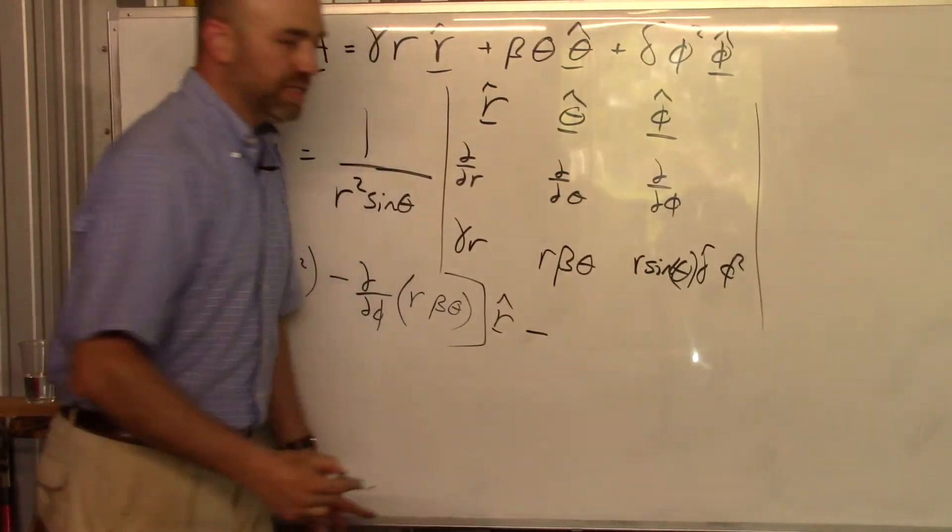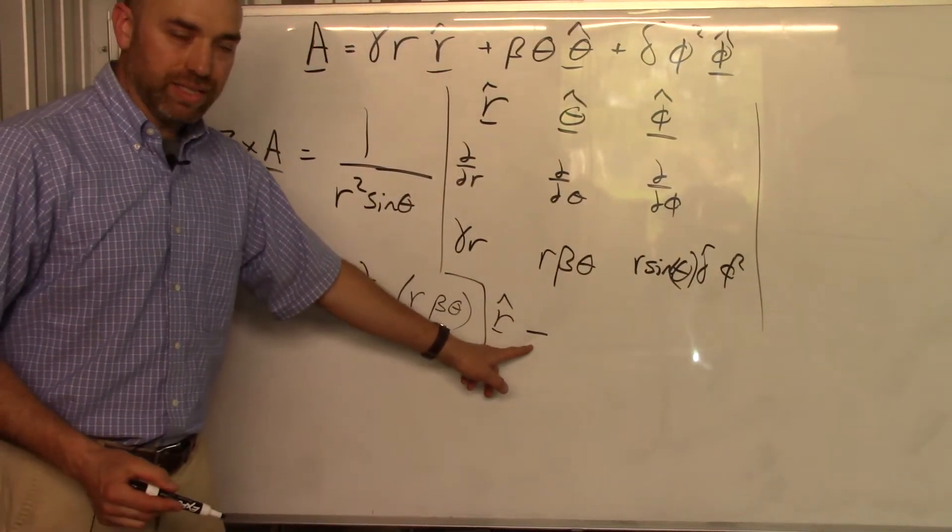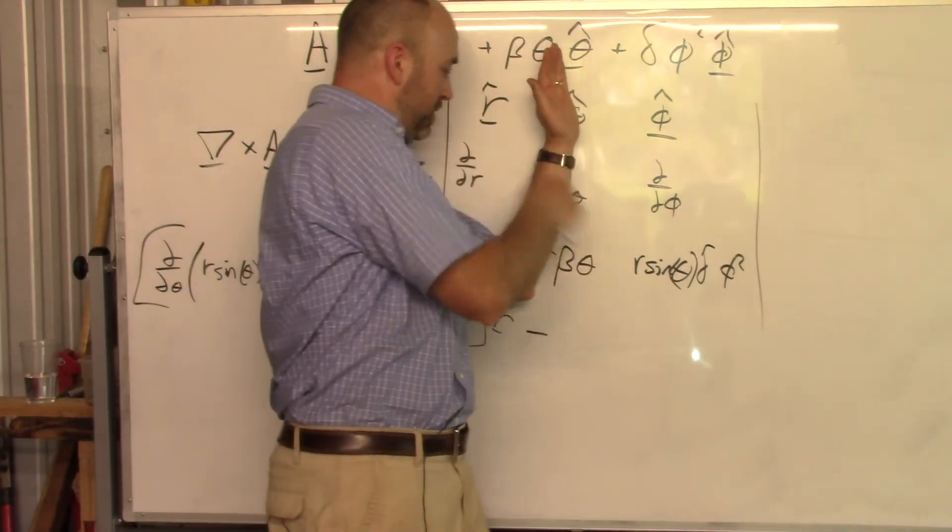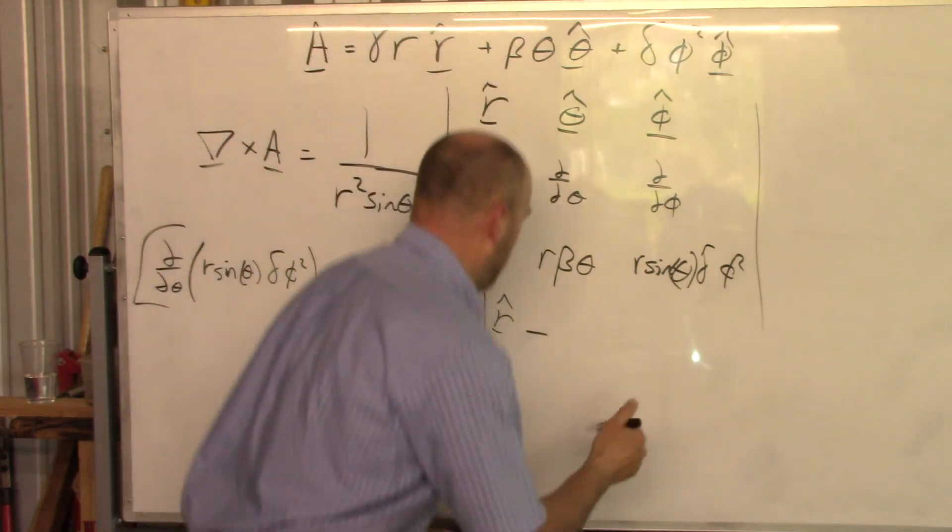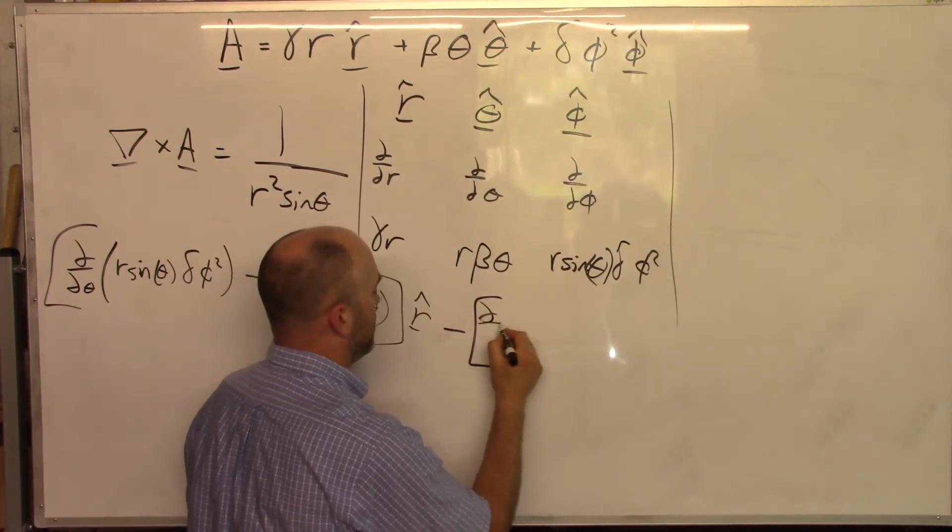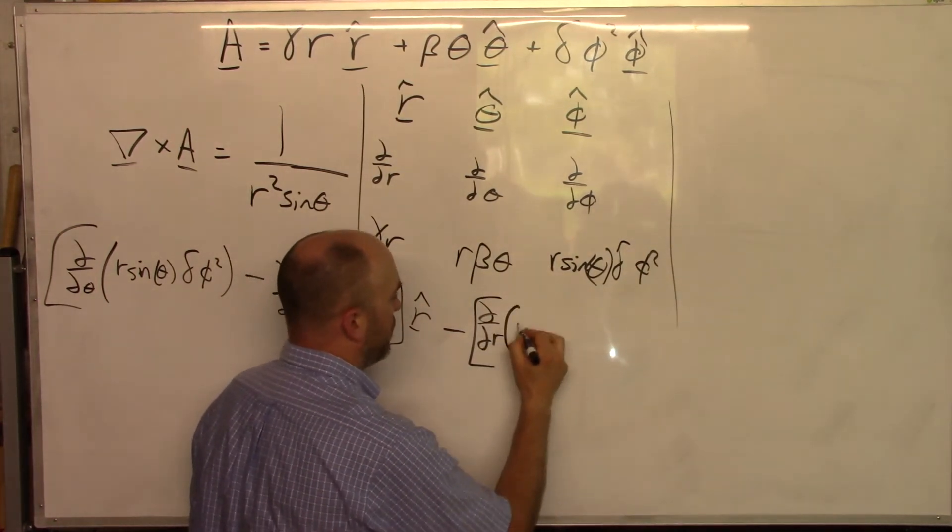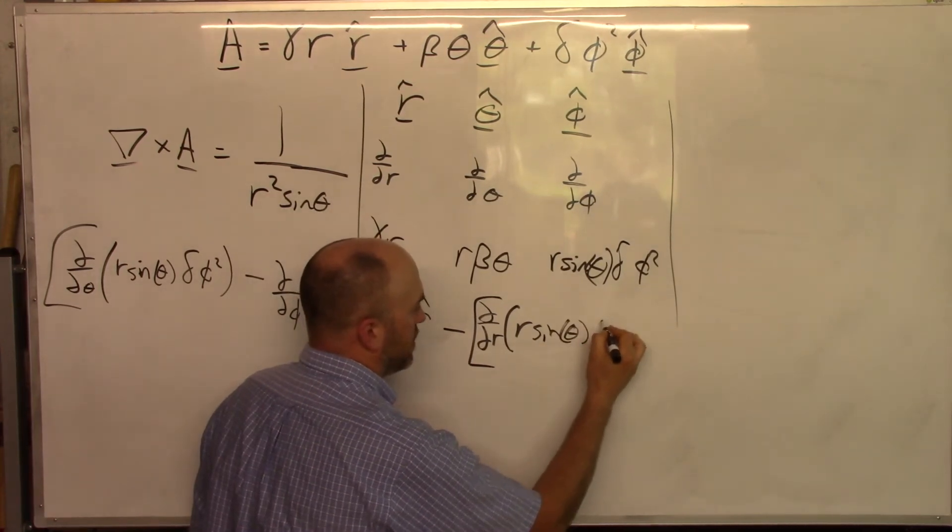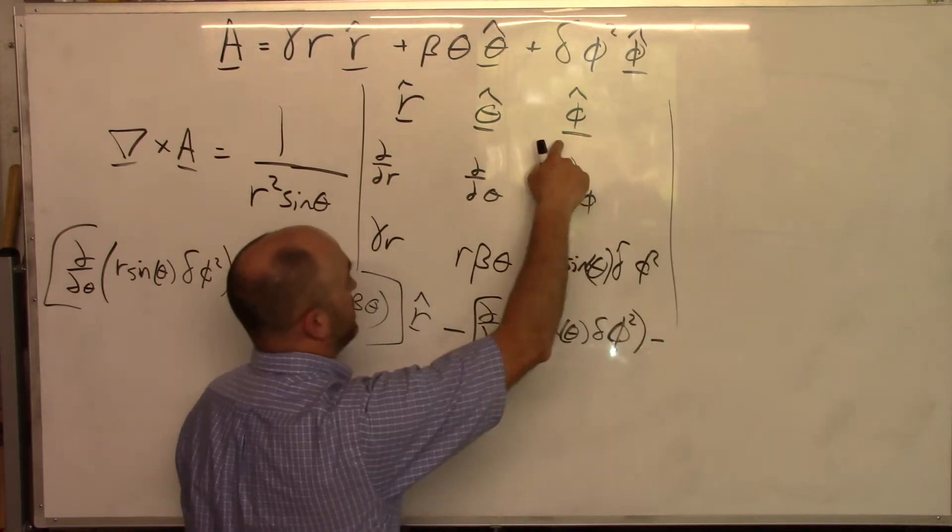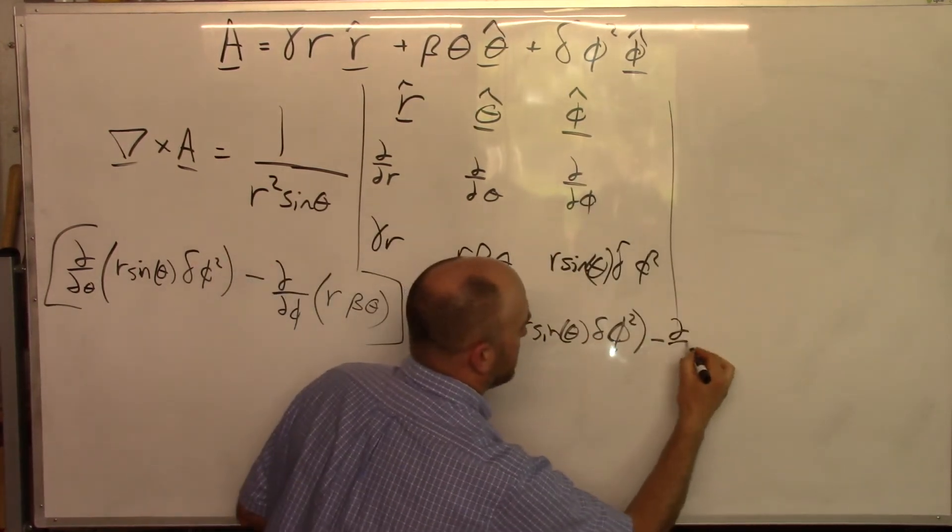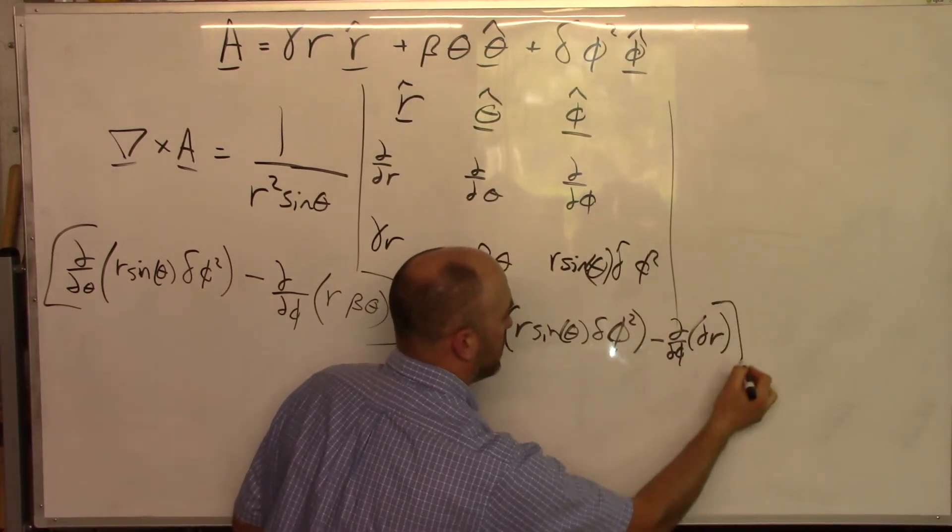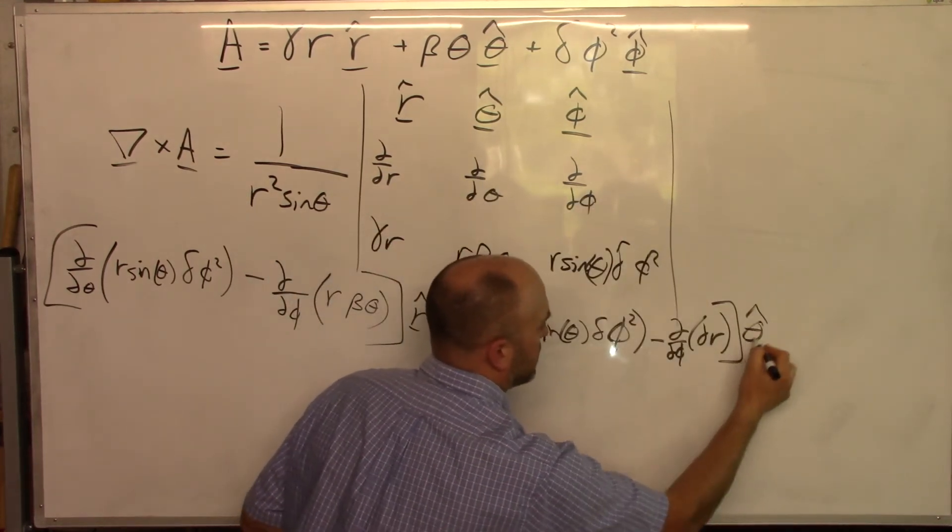And now you got to do minus. Remember that's the most forgotten minus sign in all of cross product-dom. And so now we're going to cover up the middle row, and we're going to do this times this minus this times this. Okay, so I'll put the big bracket there. So it's going to be this times this. So it's going to be d by dr of r sine theta delta phi squared minus this times this d by d phi of gamma r. And that is times theta-hat plus.